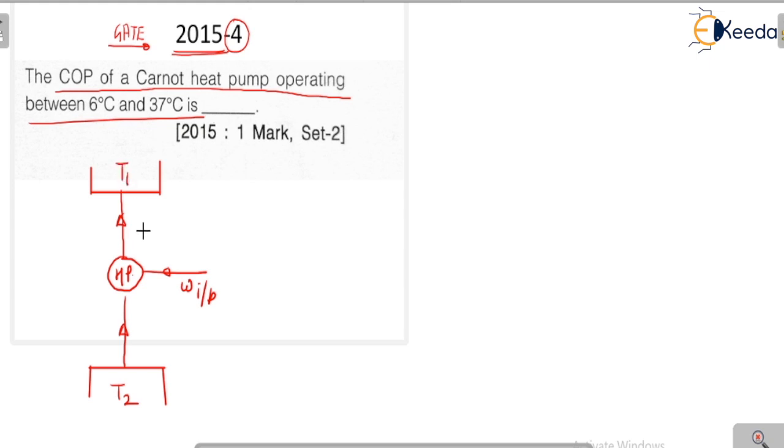And for that question, your T2 temperature is given as 6 degree centigrade. And here your T1 value is given as 37 degree centigrade. That means from here your Q1 heat gonna be rejected, and here your Q2 heat gonna be extracted by the heat pump.